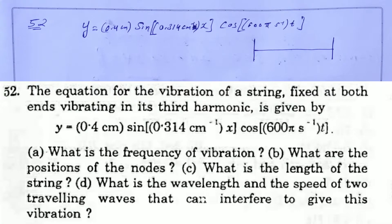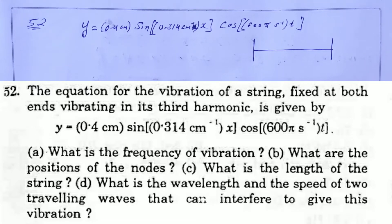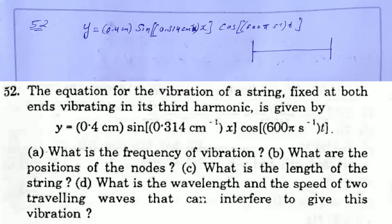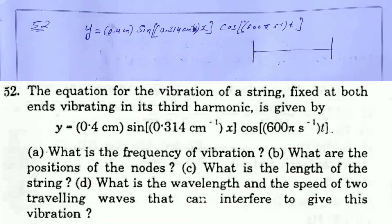Bama Solution Chapter 15: Wave Motion and Wave on a String, Question 52. The equation for the vibration of a string fixed at both ends vibrating in its third harmonic is given. Questions: (1) What is the frequency of vibration? (2) What are the positions of the nodes? (3) What is the length of the string? (4) What is the wavelength and speed of two traveling waves that can interfere to give this vibration?